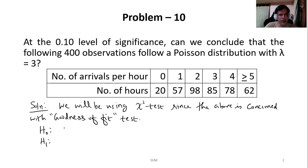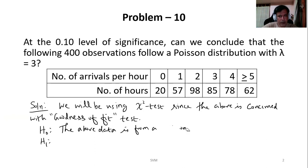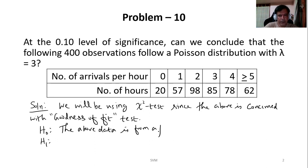Here the hypothesis will say that the above data is from a population which follows Poisson distribution PD.